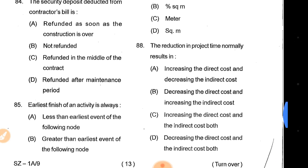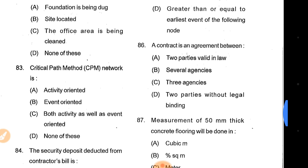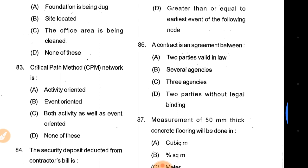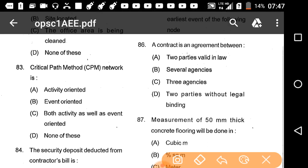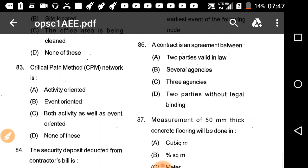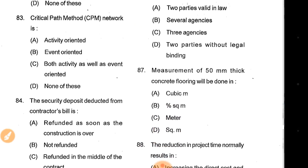Question 85/86: A contract is an agreement between two parties valid in law, not several agencies, three agencies, or without legal binding. Option A is the correct answer.